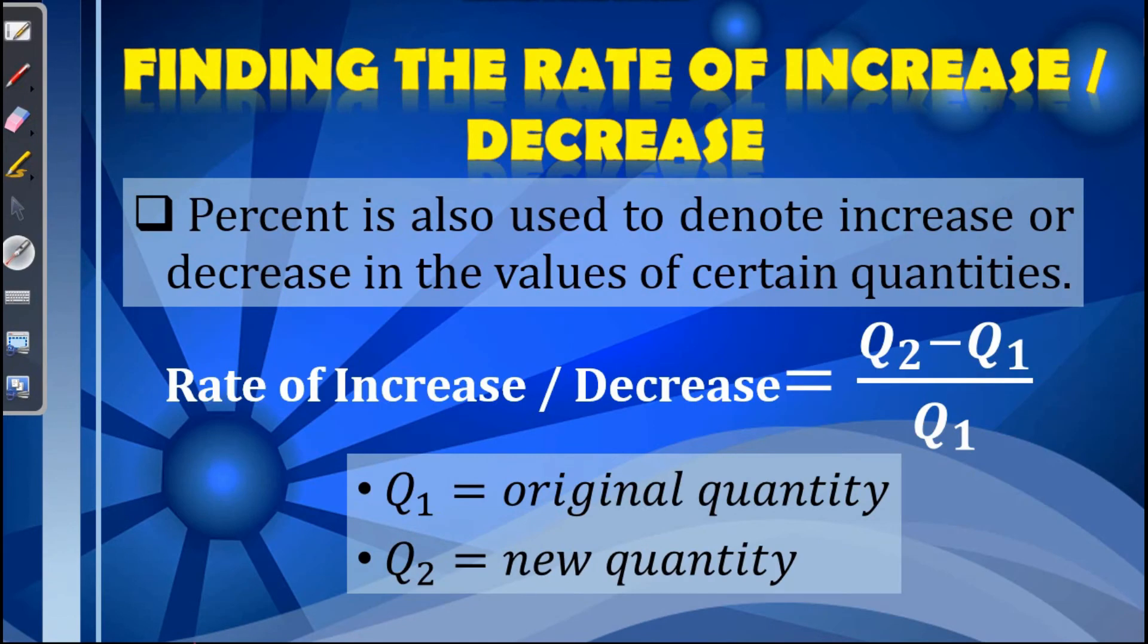Aside from finding the percentage, rate, and base, percent is also used in finding the rate of increase or decrease. Percent is also used to denote increase or decrease in the values of certain quantities. So to find the rate of increase or decrease, we have to follow the formula Q sub 2 minus Q sub 1 all over Q sub 1. Where Q sub 1 is the original quantity, while Q sub 2 is the new quantity.